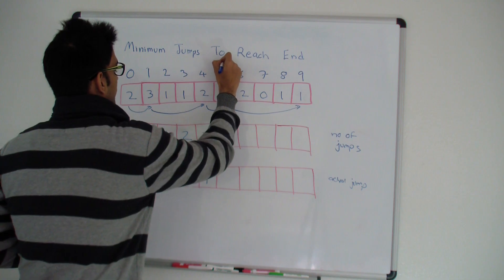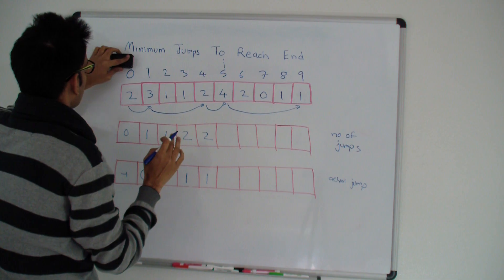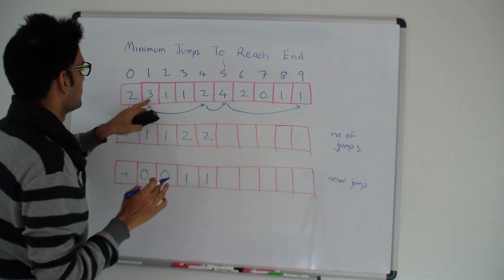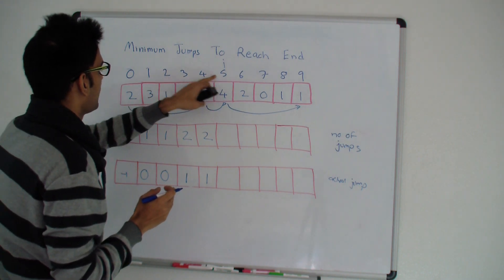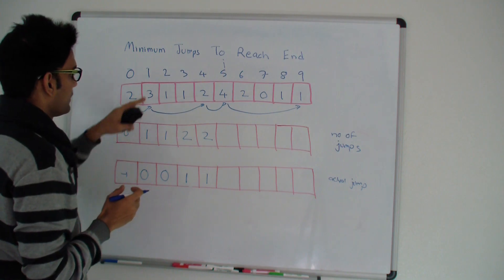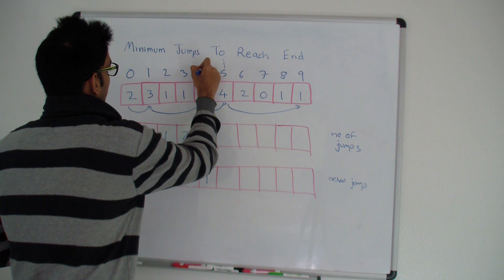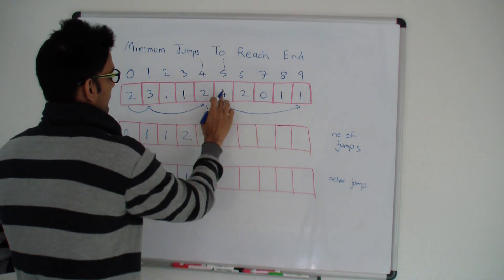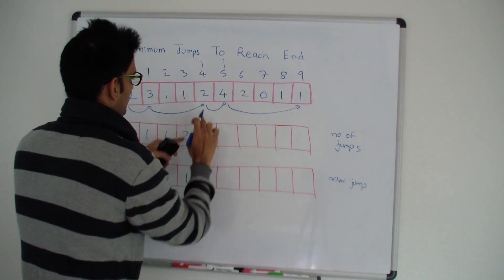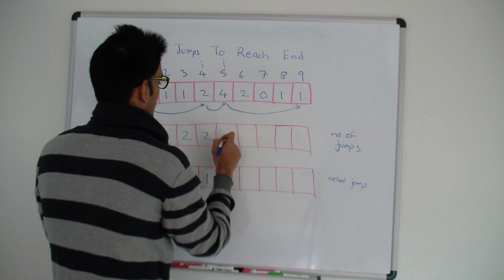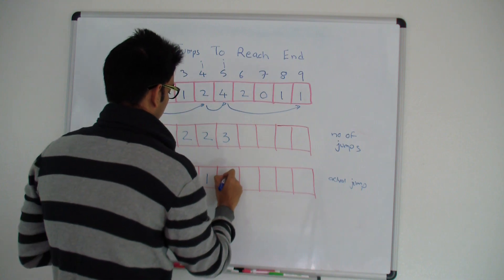Now i is five. Can you reach five from zero? No. From one? No — from one at max you can jump three steps, so at max you can reach four. From two? No. From three? No. From four, I can take one step and reach five. So the minimum number of steps to reach five is the minimum steps to reach four, which is two, plus one — so that's three. We indicate reaching five from four.